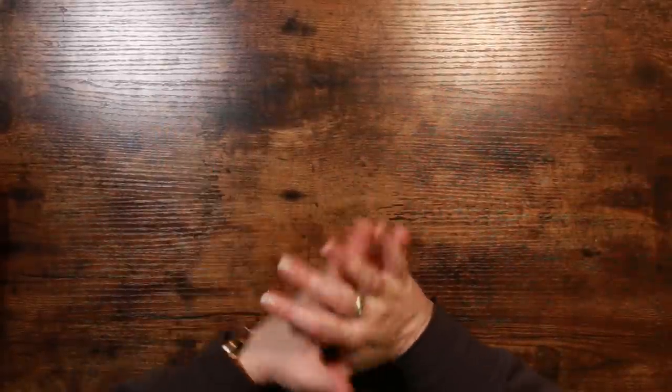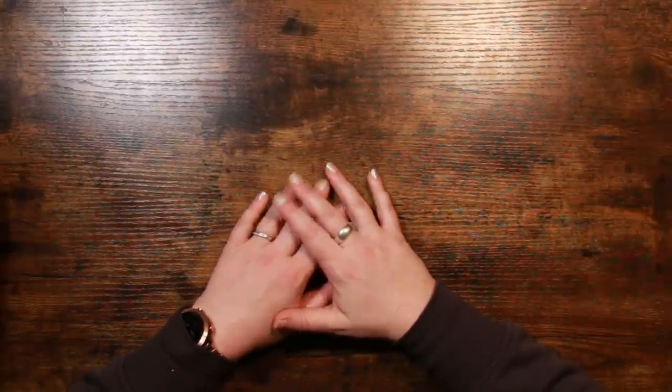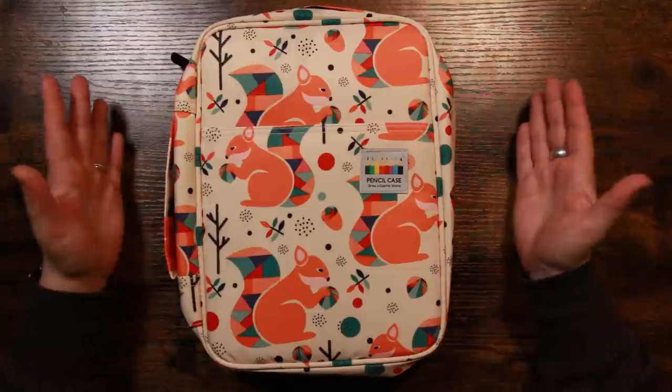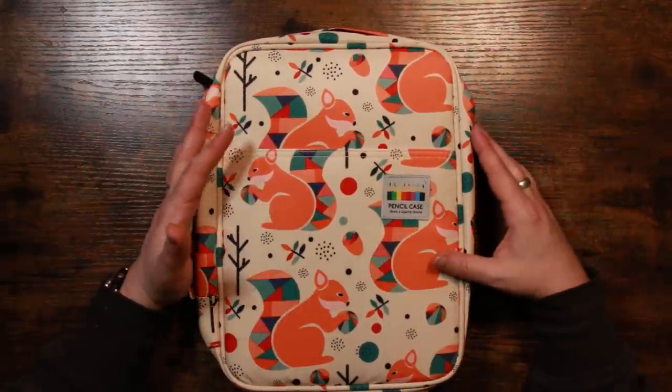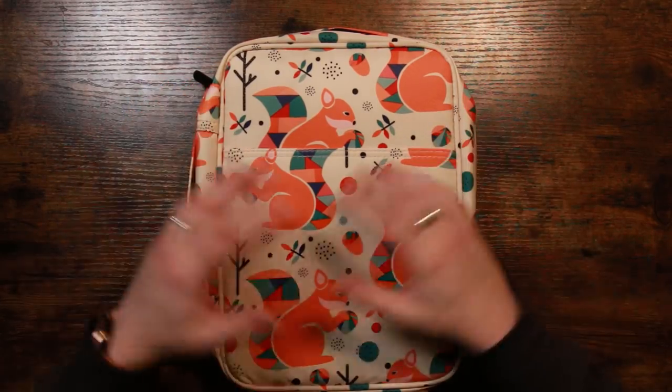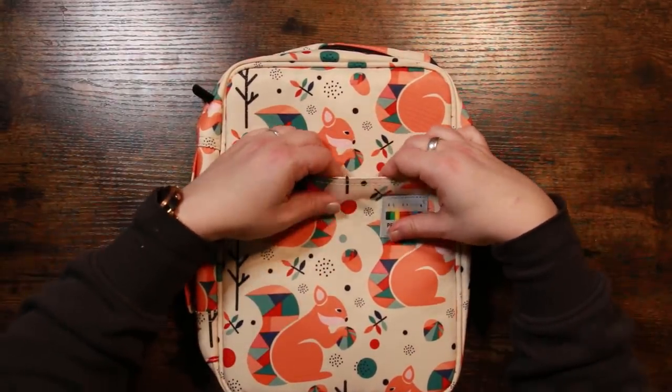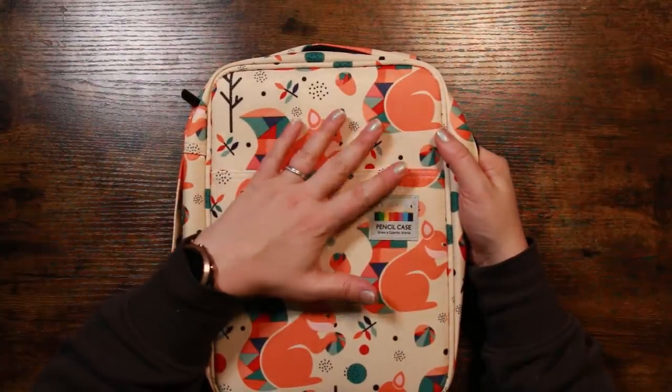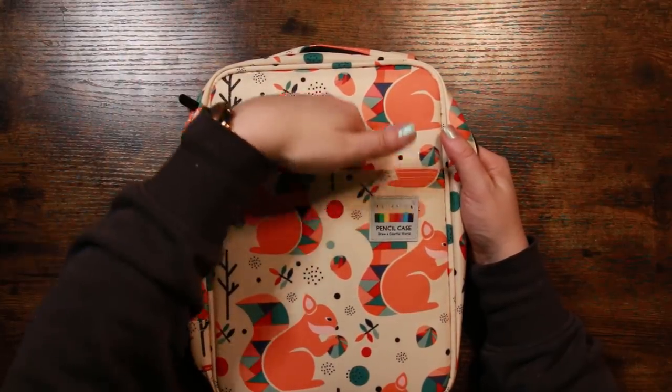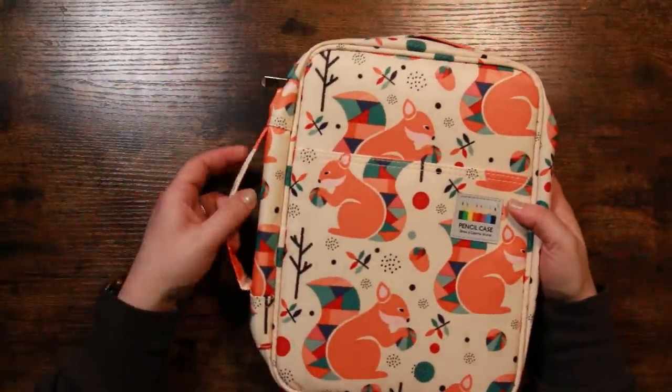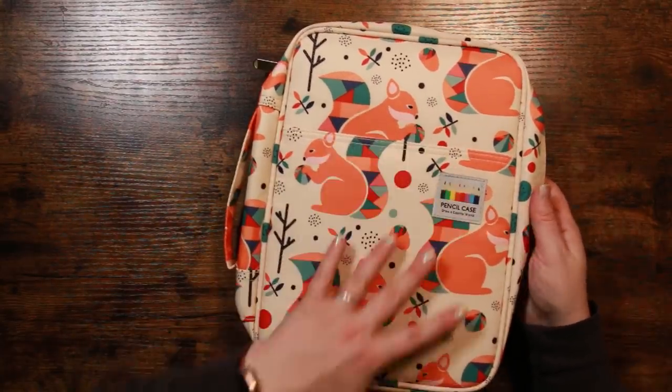First up we have an Amazon fairy. This parcel has come from Valerie and she has been snooping in my Amazon wish list. She has so very generously and kindly sent me this. Isn't this just freaking adorable apart from the fact it's huge? This is one of the pencil cases that I had seen on Amazon that I really liked and the reason I wanted it is for the design.